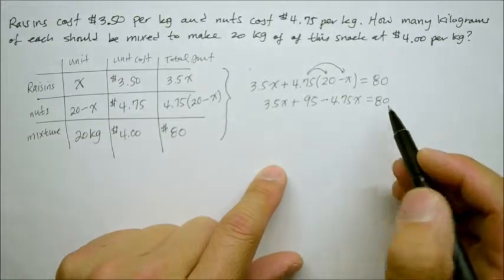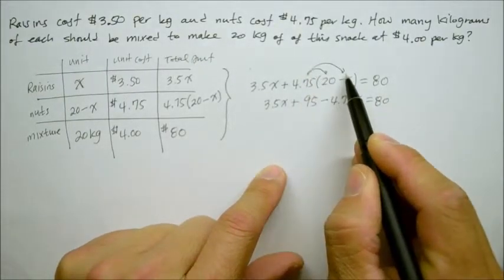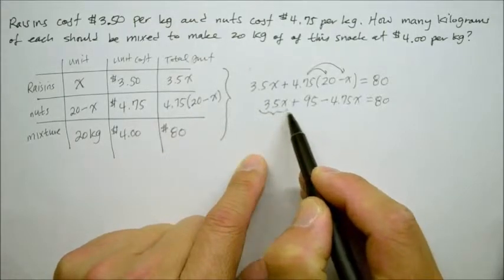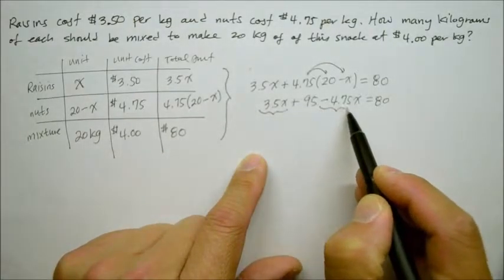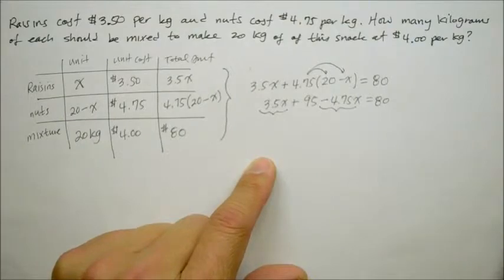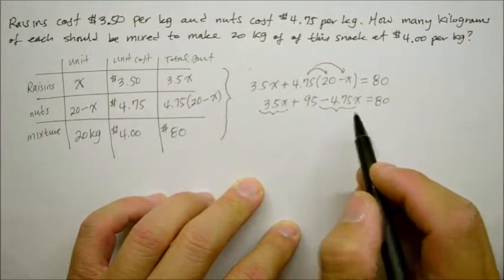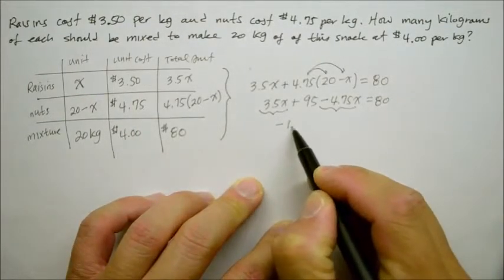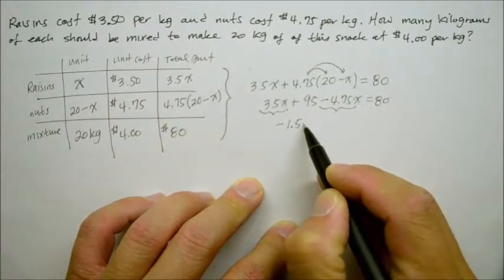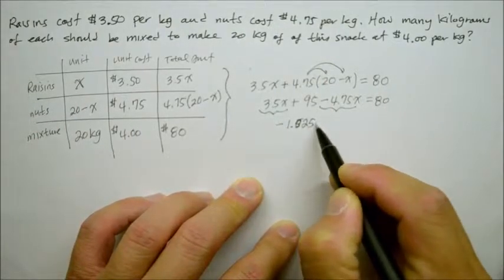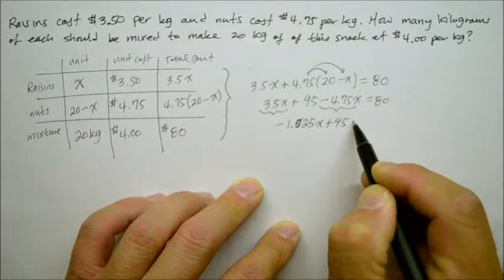Now we're going to combine the like terms. Usually when we do the distributive property, what follows is combine the like terms. In this case, we have 3.5X combined with negative 4.75X. So 4.75X minus 3.5X gives me negative 1.25X plus 95 is equal to 80.